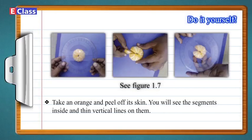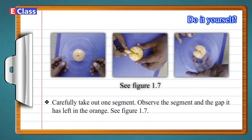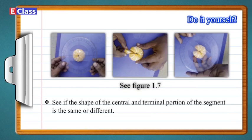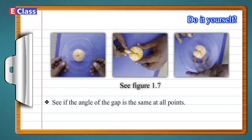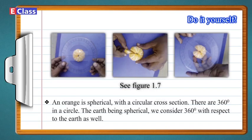Do it yourself: Take an orange and peel off its skin. You will see the segments inside and thin vertical lines on them. Carefully take out one segment. Observe the segment and the gap it has left in the orange. See Figure 1.7. See if the shape of the central and terminal portion of the segment is the same or different. See if the angle of the gap is the same at all points. Find how many segments there are in an orange. An orange is spherical with a circular cross section — there are 360 degrees in a circle. The earth being spherical, we consider 360 degrees with respect to the earth as well.